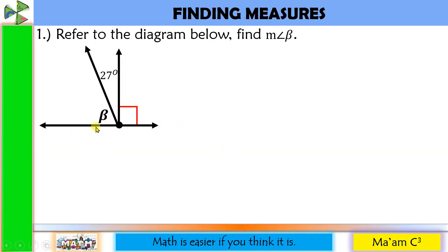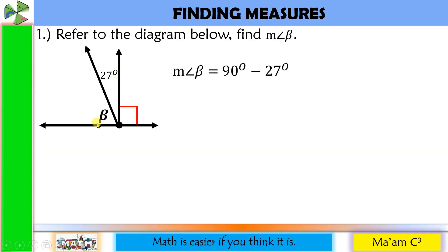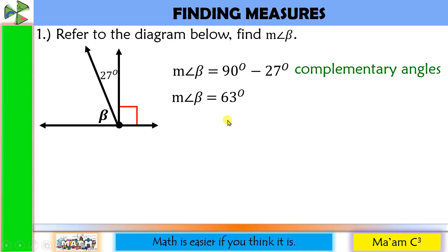A straight line creates a 180-degree angle. This symbol here means that this line is perpendicular with this line, thus creating a 90-degree angle. So to solve for angle beta, we just have to subtract 27 from 90 degrees, because they are complementary angles. This gives us 63 degrees. So angle beta is 63 degrees.